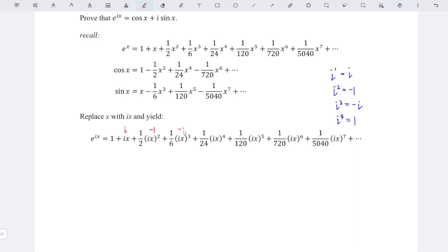i cubed is minus i, i to the power of 4 is 1, and it repeats exactly the same pattern. So we can actually copy: i, minus 1, minus i, and so on.